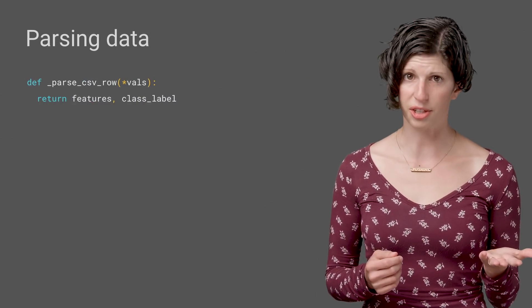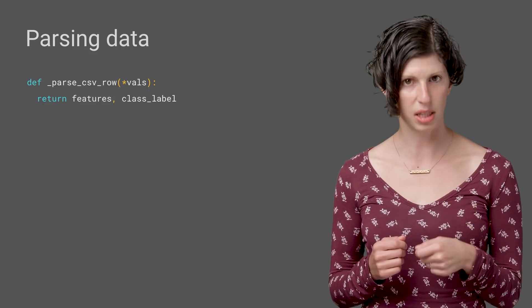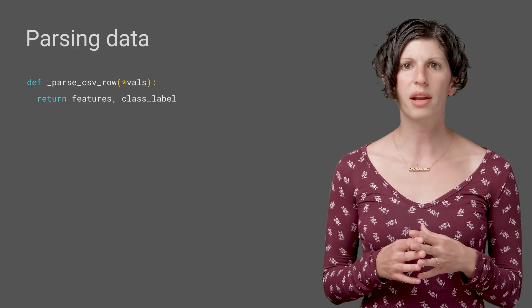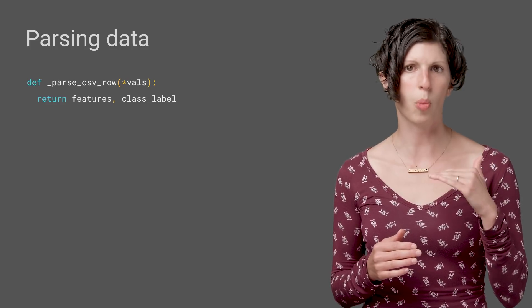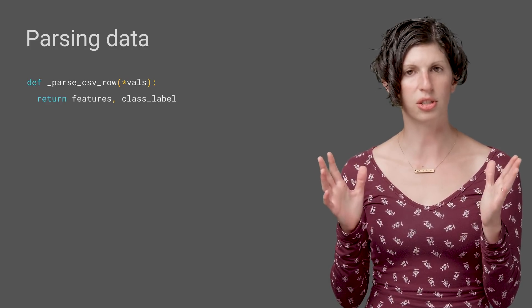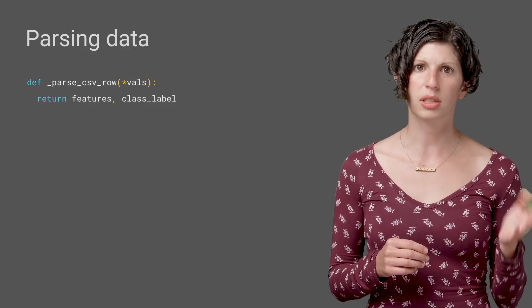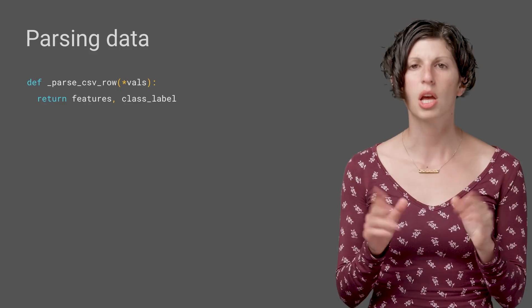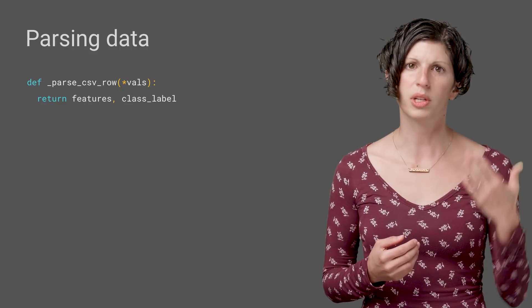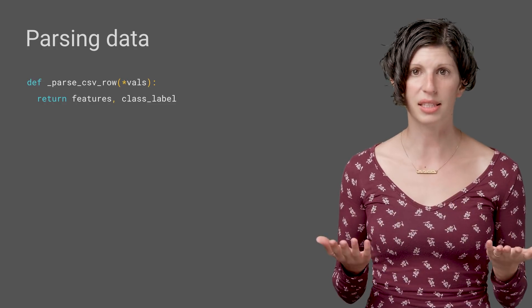So we have tuples of 55 integers, but we want our data to reflect the structure of the data we know is in there. For that, we can write a function to apply to our data set row by row. This function will take in the tuple of 55 integers in each row. A data set is expected to return tuples of features and labels. So our goal with each row is to parse the row and return the set of features we care about, plus a class label.